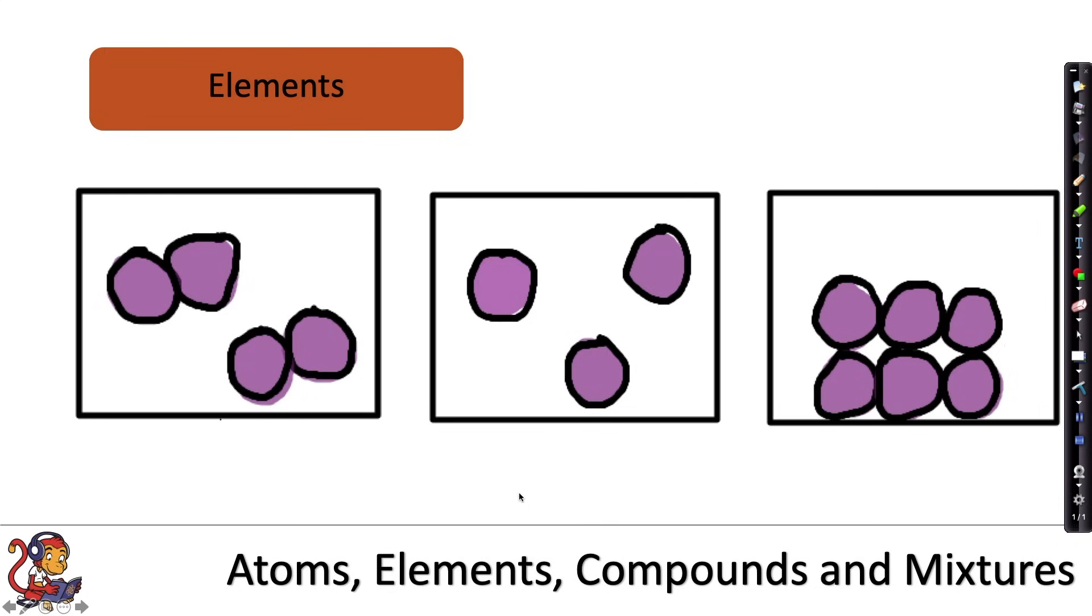If we were to draw an element as a particle model, it might look a little bit something like these examples. These two would be gases and this one would be a solid. But they'd all be an element because they're made up of only one type of atom, shown in the diagrams by having only one colored circle in them. This, for example, might be the way that we represent the solid gold.